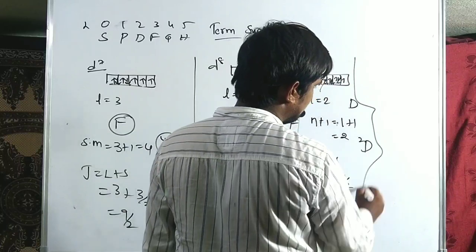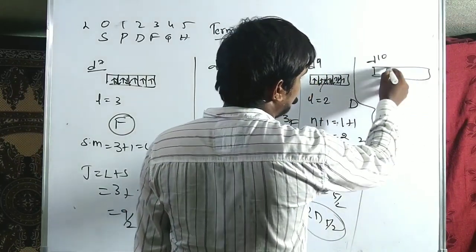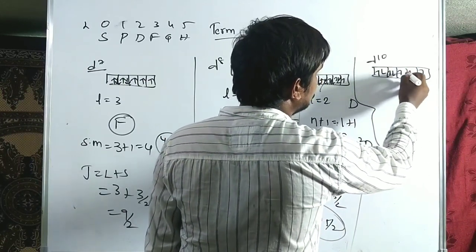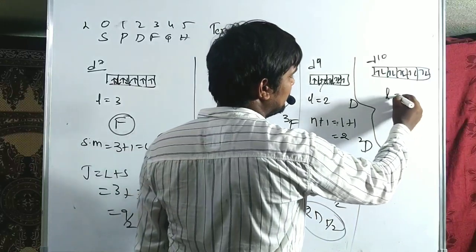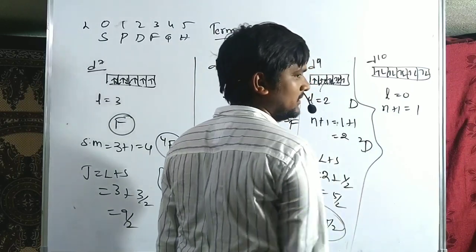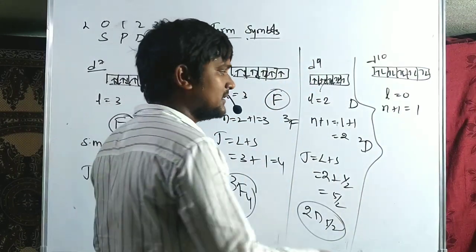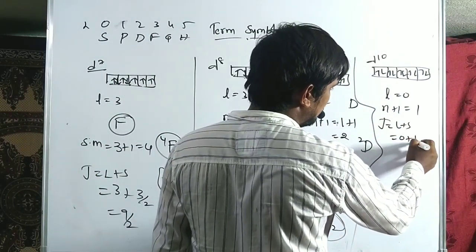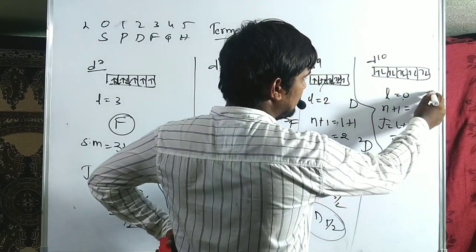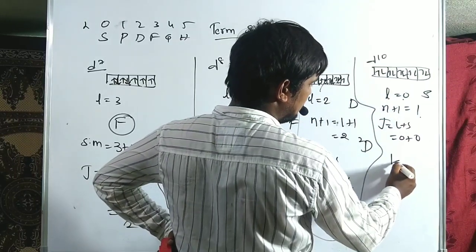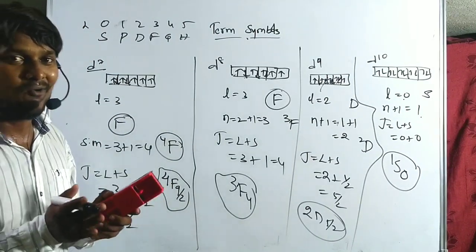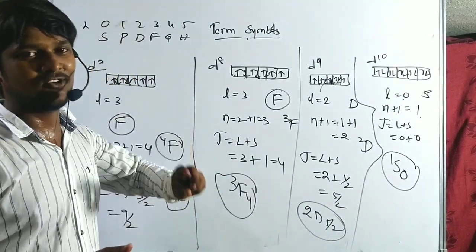For D10: all ten electrons fill every orbital — all ML values cancel, so L = 0. No unpaired electrons, multiplicity = 0+1 = 1, term is 1S. J = L+S = 0+0 = 0. The ground term symbol for D10 is 1S0.